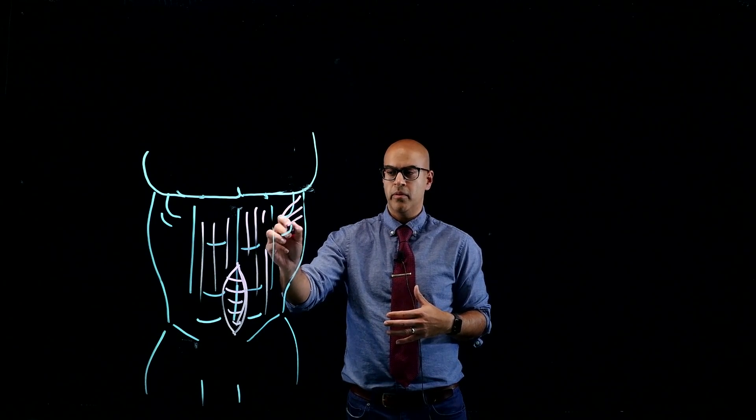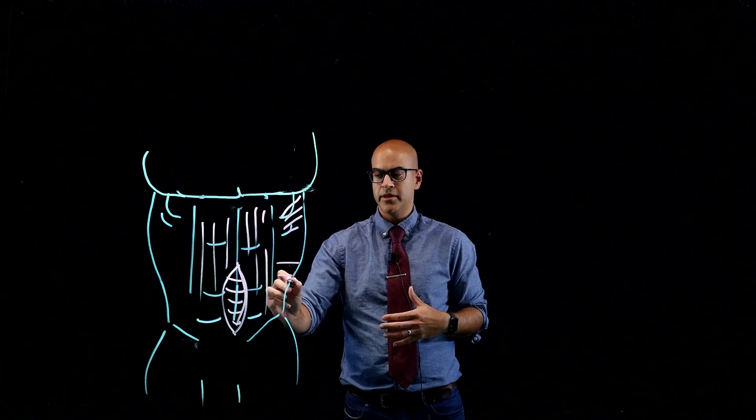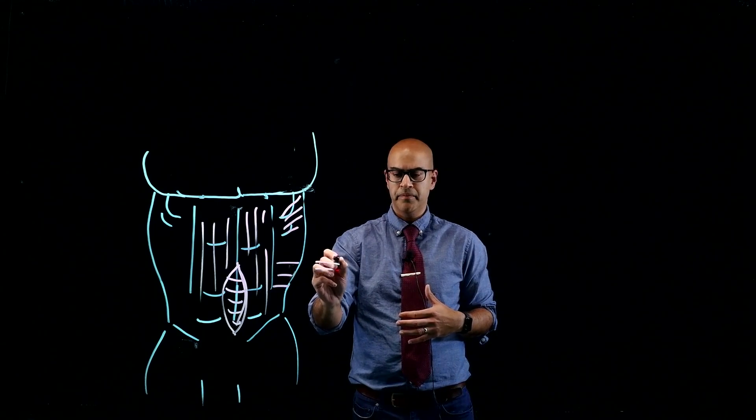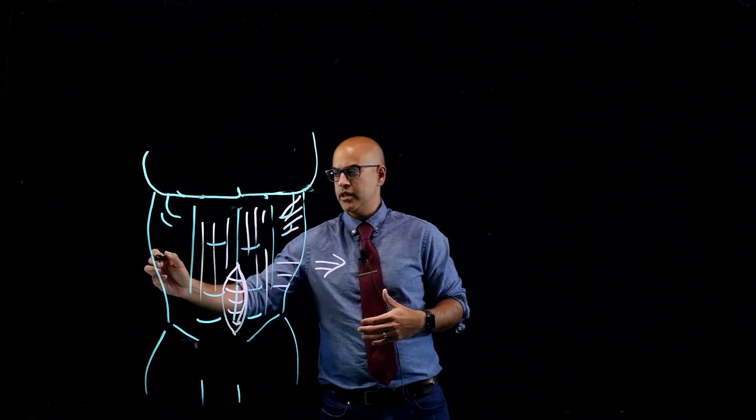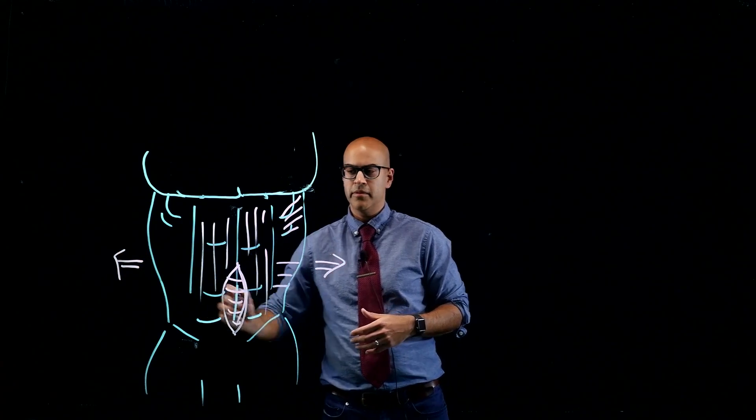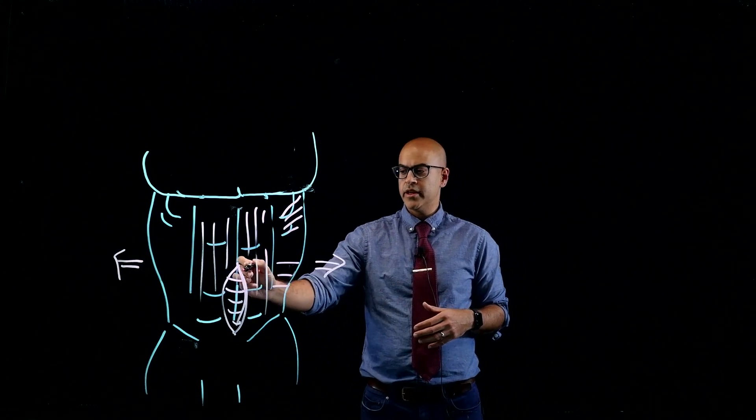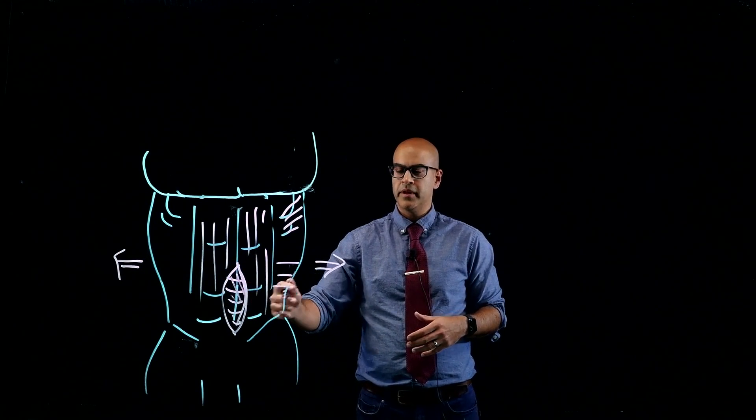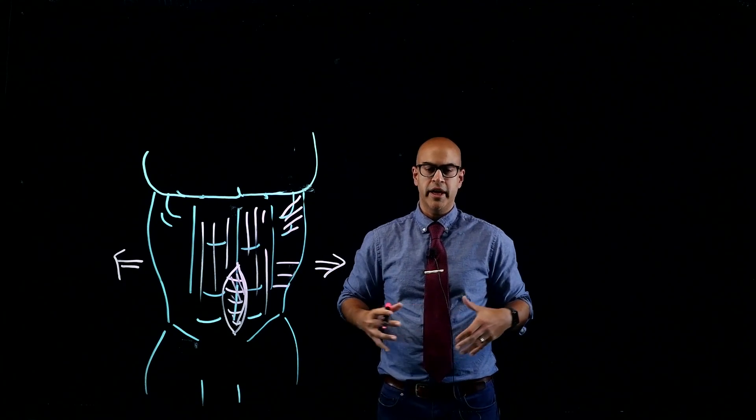And what these muscles do is they help pull your abdominal wall out. So they pull this way and they pull this way. When you have a big hernia in the middle of your abdominal wall, all these muscles do is pull that hernia apart.